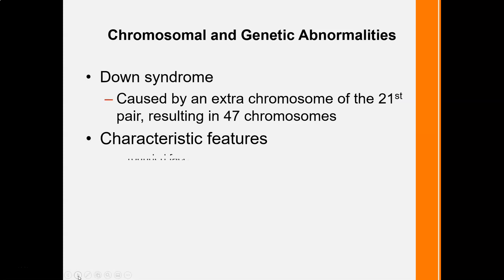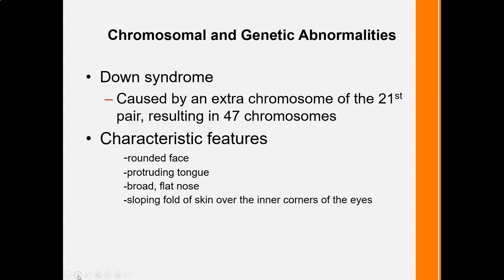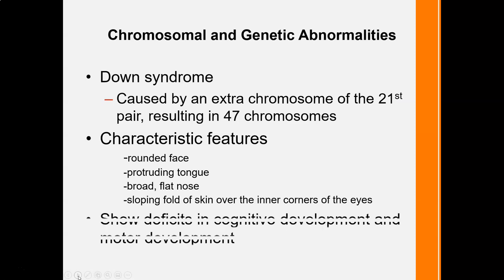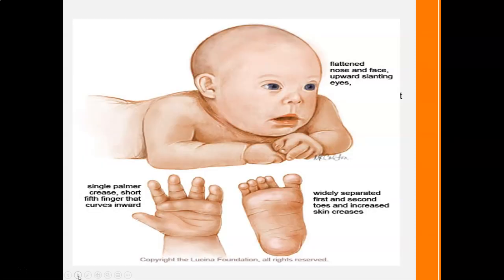As a result of that extra chromosome on the 21st, the facial features of individuals with Down syndrome include a rounded face, protruding tongue, broad flat nose, and a sloping fold of skin over the inner corner of the eyes. They may also suffer from cognitive and motor development issues and commonly have heart conditions that are now treatable, allowing them to enjoy longer lives. Physical features also include a single palm crease, a short fifth finger that turns inward, and widely separated first and second toes.